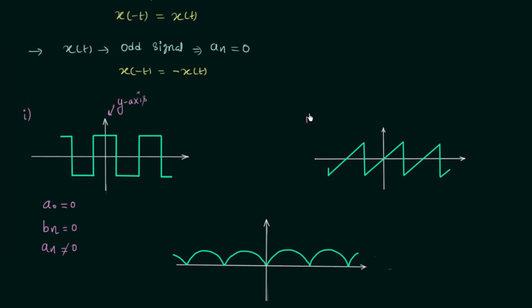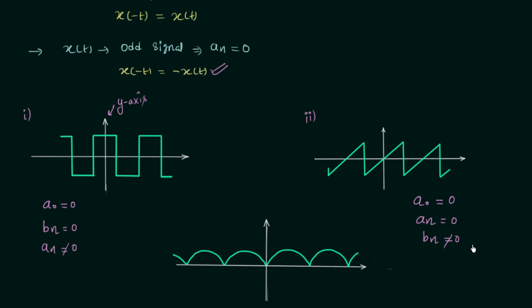In the second example the waveform is again symmetrical about the time axis, so the DC value is zero. But this time the waveform is not symmetrical about the y-axis. If you perform time reversal and then amplitude reversal you get the same signal, satisfying the condition for an odd signal. Therefore a_n = 0 and b_n ≠ 0. There is no need to calculate a_0 or a_n — even if you did, you would find they equal zero. Simply calculate b_n using the formula.